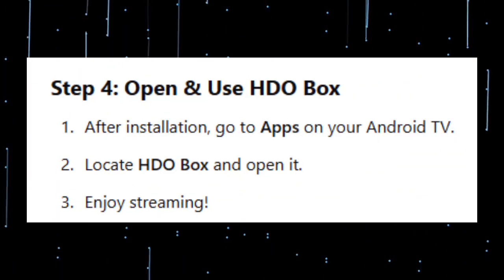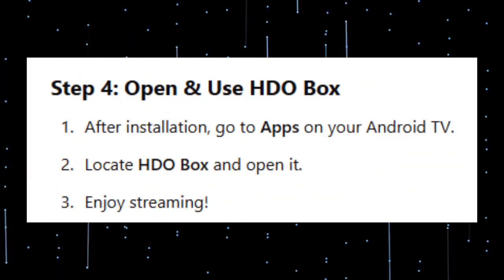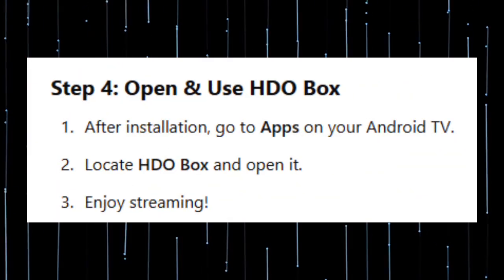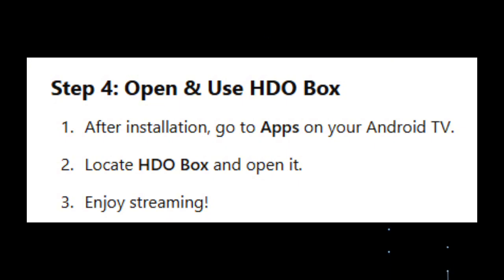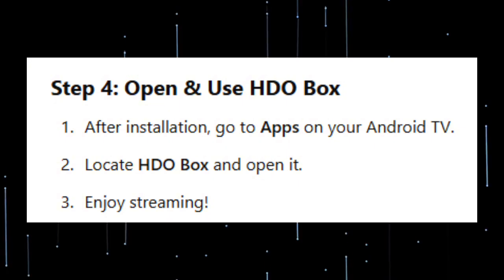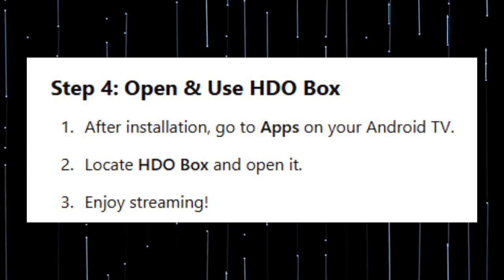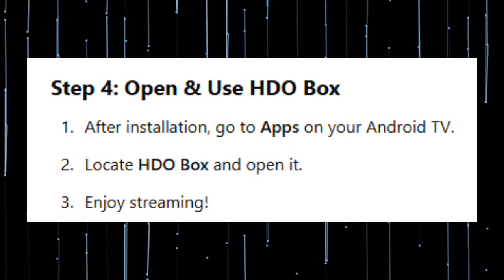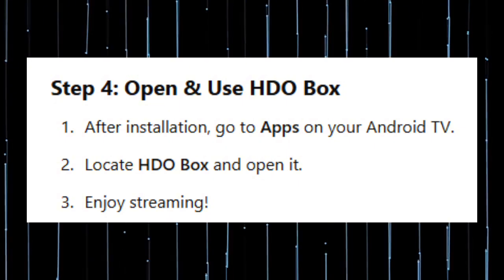Step 4: Open and use HDO Box. After installation, go to Apps on your Android TV, locate HDO Box, and open it. You can now enjoy streaming.